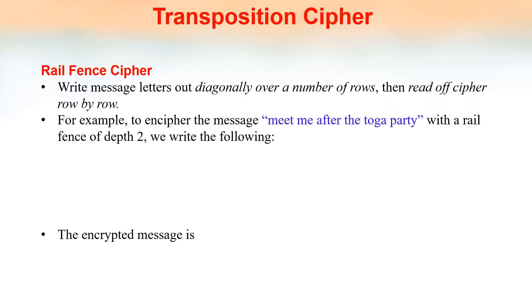One type of transposition cipher is the rail fence cipher. In this, the plaintext message is written diagonally over a number of rows. Then, the cipher text is read off row by row.